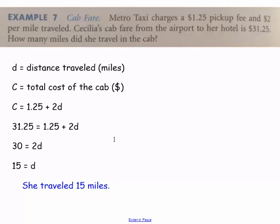So, we've got D equals 15. Then we come up here to our definition of D and it's the distance traveled. So, the answer is 15 miles.